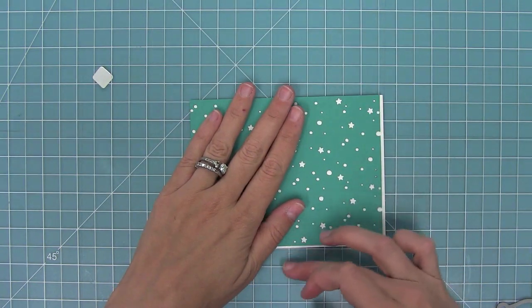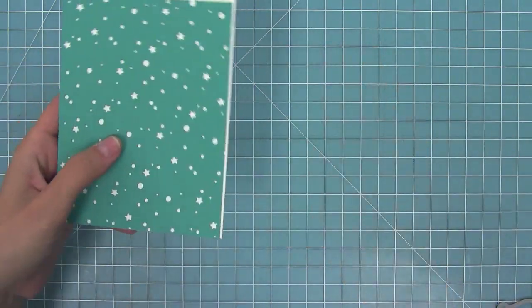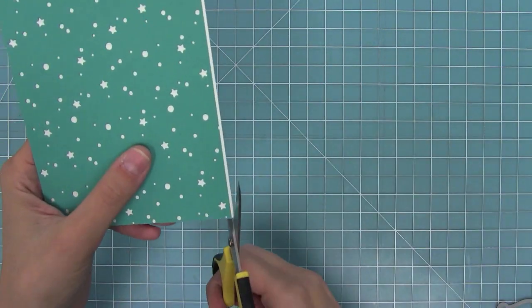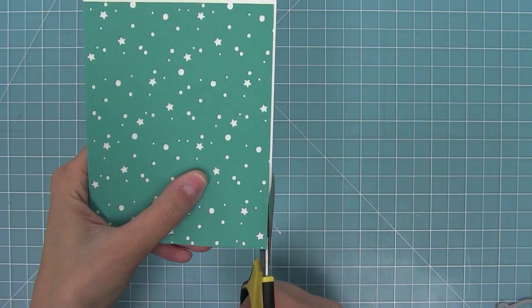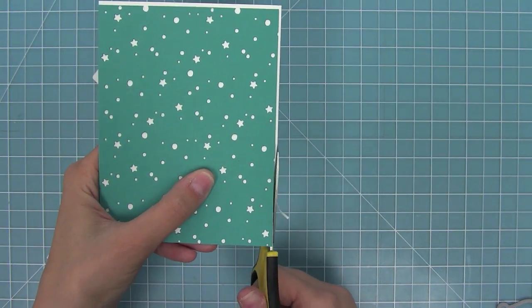I'm using some multi-matte liquid glue to glue this down to my white cardstock, and that's because I don't want tape runner to show through all those stars and little holes. I just use glue all the way around and it's a great way to do it.